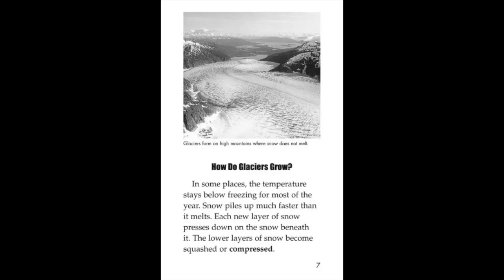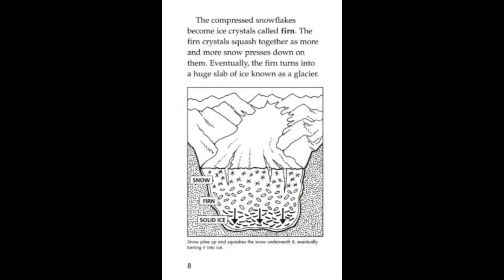Let me check if chapter 3 will provide me with any information on that. How do glaciers grow? In some places, the temperature stays below freezing for most of the year. Snow piles up much faster than it melts. Each new layer of snow presses down on the snow beneath it. The lower layers of snow become squashed or compressed. The compressed snowflakes become ice crystals called firn. The firn crystals squash together as more and more snow presses down on them. Eventually, the firn turns into a huge slab of ice known as a glacier.